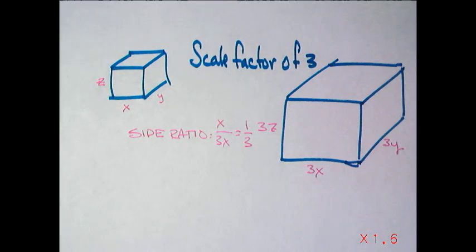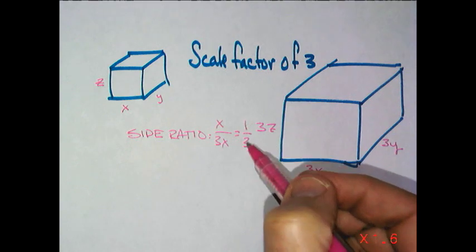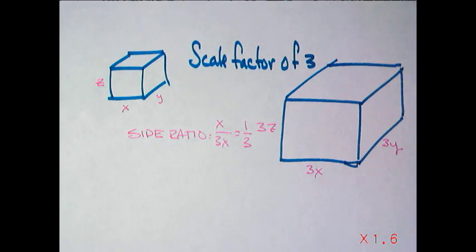The scale factor is 3, so we're growing big, so the side ratio is small to big, 1 to 3. No problem there.